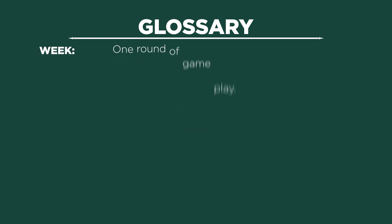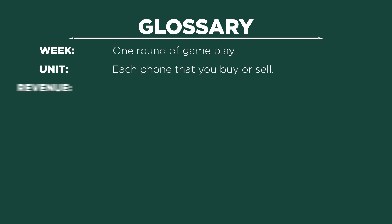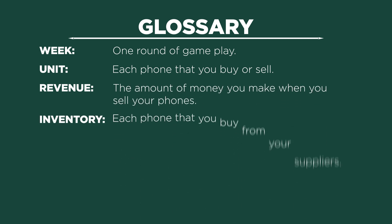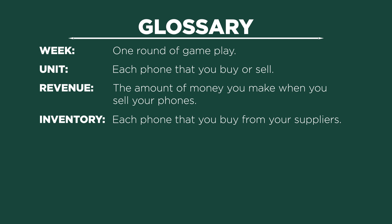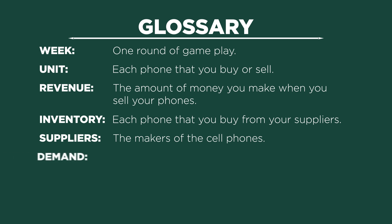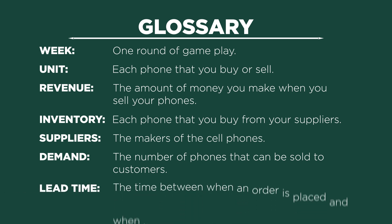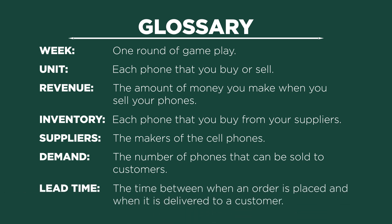First, when we refer to one week, we mean one round. You'll play multiple rounds today. Next, a unit is each phone that you buy or sell. Your revenue is the amount of money that you will make when you sell your phones. Each phone that you buy from your suppliers is recognized as inventory. The suppliers are makers of the cell phones. Demand is the number of phones that can be sold to customers. And last, and maybe most important, lead time is the amount of time that lapses between when an order is placed to when an order is delivered to a customer. Try to keep these terms in mind as you work through this activity.